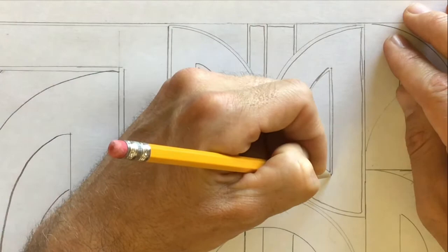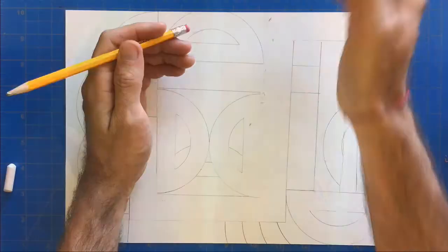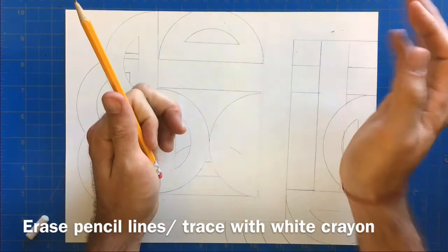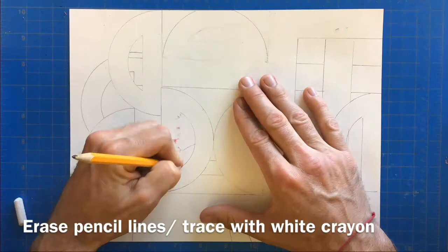All right, so now that I'm done with that, I'm going to get my white crayon. I'm going to mark those spaces in between my shapes with the wax from the crayon, and that will resist the paint. So I'm going to erase a line, mark over it with my crayon, and then go on to the next line. I erase the line and trace it with my white crayon until I have done all the lines in my picture.